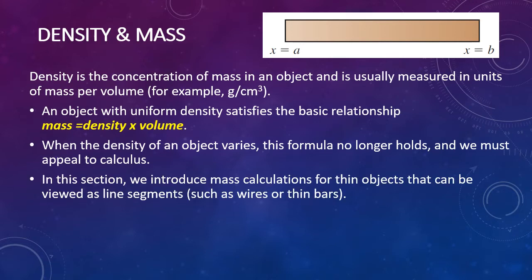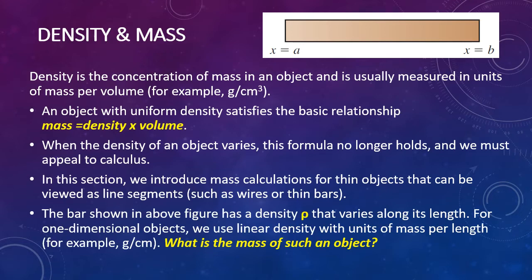In this section, we introduce mass calculations for thin objects that can be viewed as line segments, such as wires or thin bars. The bar shown in the above figure has a density rho — a Greek letter that looks like a little p — that varies along its length. For one-dimensional objects, we use linear density with units of mass per length, for example grams per centimeter. What is the mass of such an object? That's what we're going to figure out how to find using integrals.